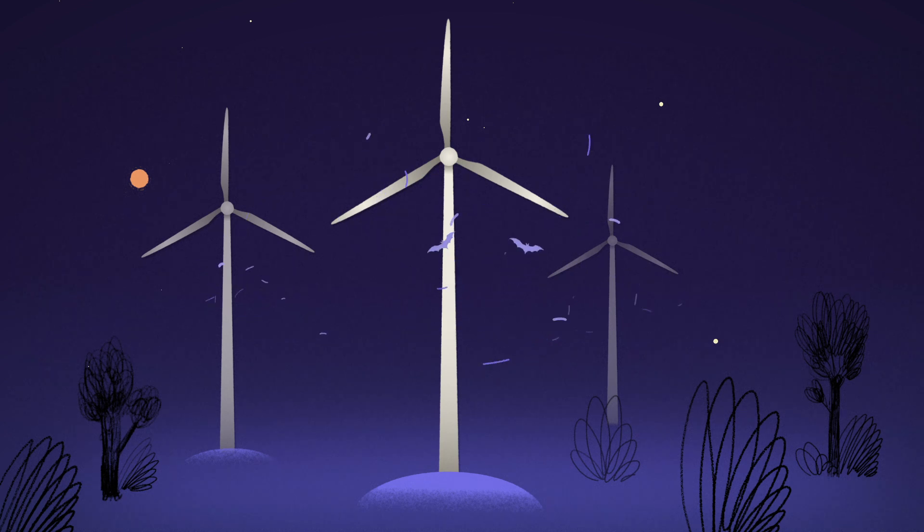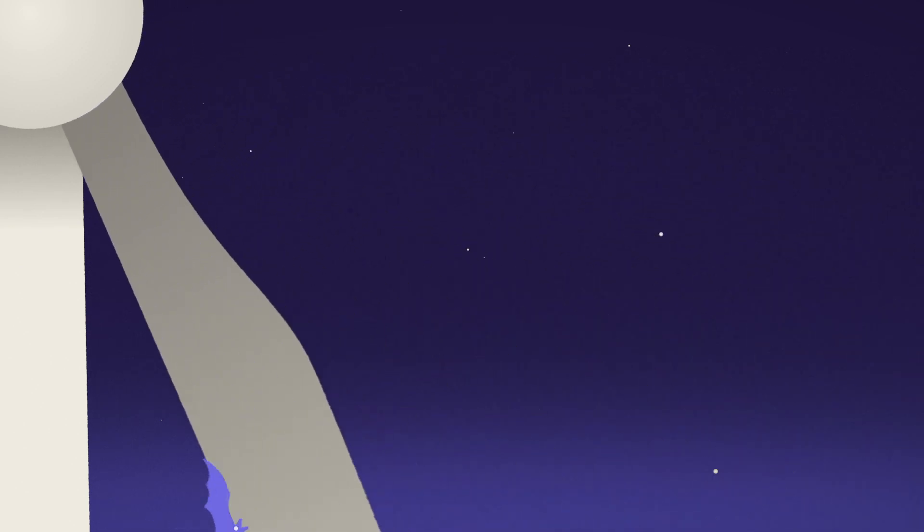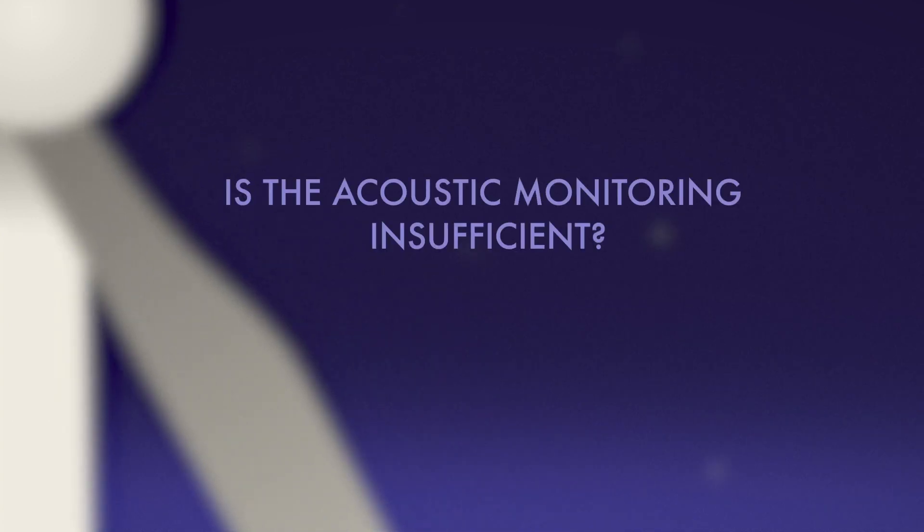For example, at night when temperatures are high, or during the migration period and low wind speeds. However, despite these existing measures, animals still die at wind turbines. This could be because the acoustic monitoring is insufficient to inform us about true bat activity.